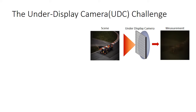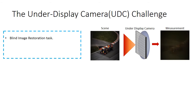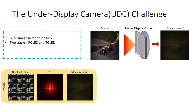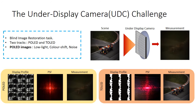The under display camera challenge sought efficient and high performing solutions for a blind image restoration task. It comprised of two tracks, each with a different display panel. The P-OLED display has a Pentyl pixel layout with a low transmission rate and images are degraded due to low light, color shift, and noise. The T-OLED display has a striped pixel layout with a relatively higher transmission rate and suffers only from blur and noise.